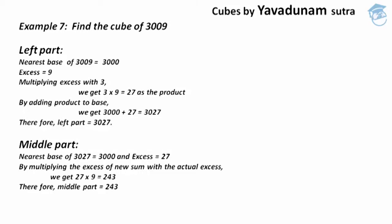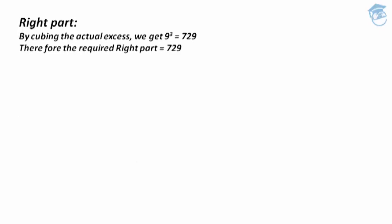After finding the middle part, we move to the right part. The only step here is to cube the actual excess. The actual excess is 9, and 9³ = 729. This 729 is the required right part.